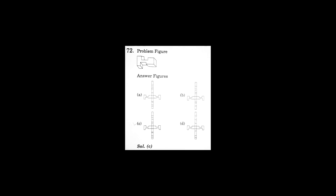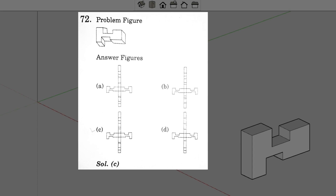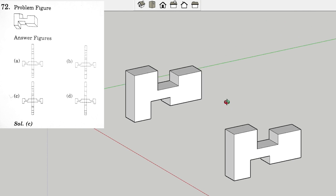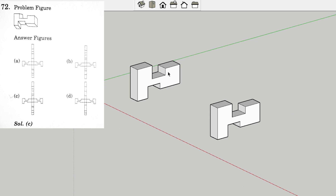This is the first question that we are going to solve. Here is our 3D model given as a question, and we have four options as an unfolded 2D form. We have to find the correct 2D form. Let's jump to the software.